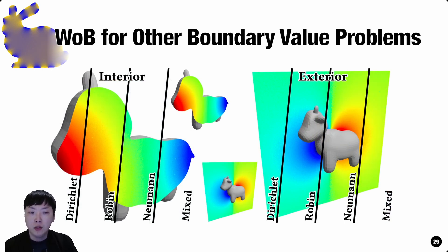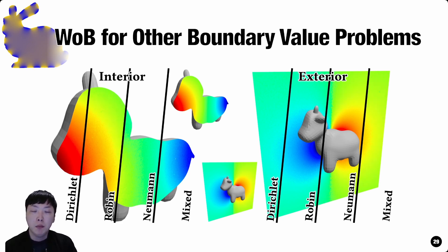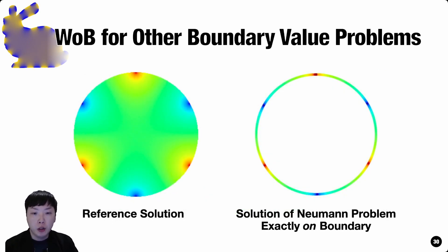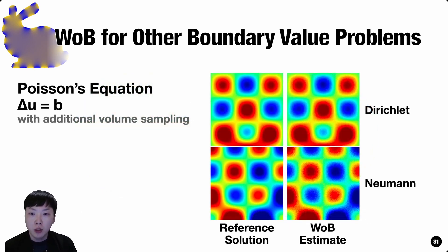The discussion so far focused on the interior Dirichlet problem, but Walk-On Boundary has high generality by using different boundary integral equations for each problem. Using the equations summarized in our paper, we get solutions to the Laplace equation with Dirichlet, Neumann, Robin, and mixed boundary conditions in both interior and exterior domains. The original Walk-On Spheres could solve only interior Dirichlet problems efficiently, and Walk-On Stars extended applicability to Neumann boundaries. Our Walk-On Boundary additionally supports Robin boundaries, allows solution estimation directly on the boundary without additional bias, and can be generalized to solve the Poisson equation with a known source term via an additional volume term evaluation at each walk step.